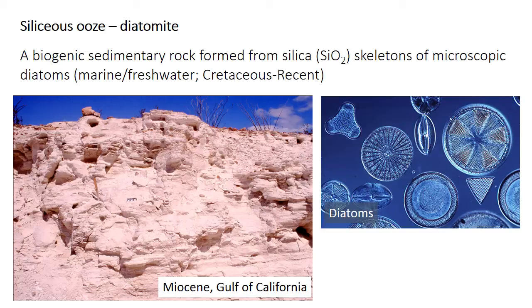Diatoms, in contrast, evolved much more recently — they really didn't become common until the Cretaceous. When they occur in enough numbers, they produce a rock called diatomite: a fine-grained, very light, often white-colored sedimentary rock made of diatom shells. The Monterey Formation, which includes exposures around Santa Cruz — the Santa Cruz mudstone — contains a lot of pure diatomite, which is mined for economic reasons in many places, or diatomaceous mudstone in some regions.